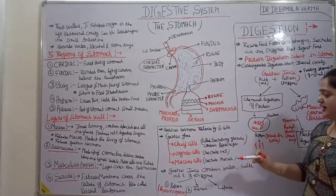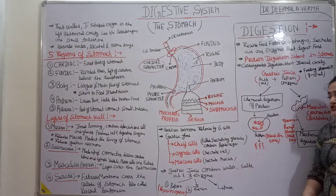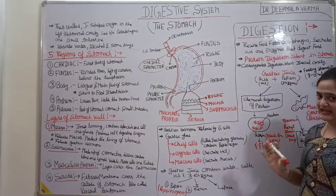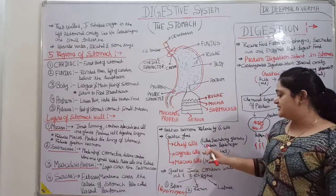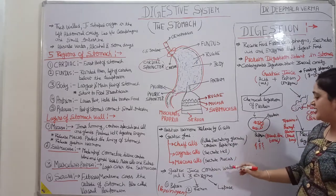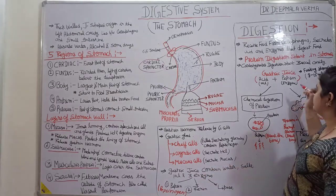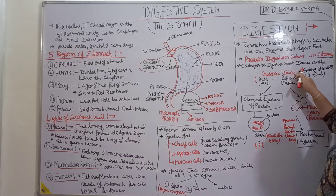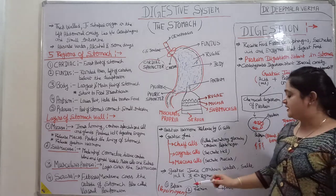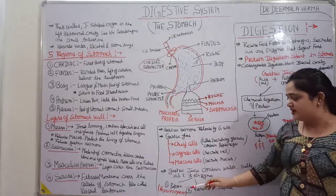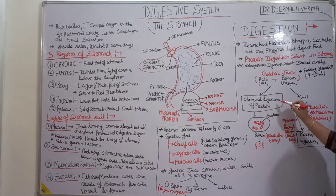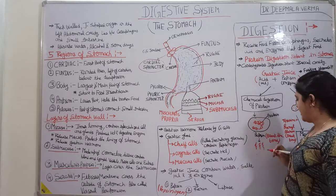The gastric gland has three types of cells: chief cells, oxyntic cells, and mucus cells. Chief cells are filled with secretory granules containing pepsinogen. Pepsinogen, in the presence of HCl, converts into pepsin. Oxyntic cells secrete HCl, and mucus cells secrete mucus. Gastric juice contains water, HCl, and enzymes. Pepsin splits the protein — this is the chemical digestion of protein.